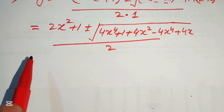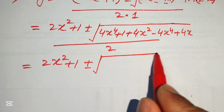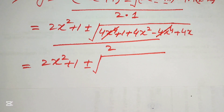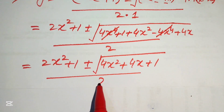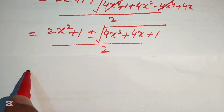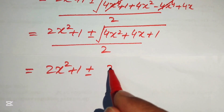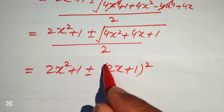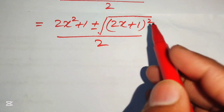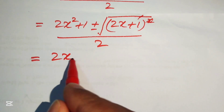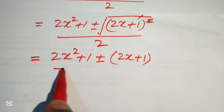We add and subtract like terms: 2x squared plus 1, plus or minus square root, where the negative 4x to the power of 4 terms cancel each other, leaving 4x squared plus 4x plus 1, divided by 2. This simplifies to 2x squared plus 1, plus or minus the square root of 2x plus 1 whole squared, divided by 2. The square root and square cancel, giving 2x squared plus 1 plus or minus 2x plus 1, divided by 2.